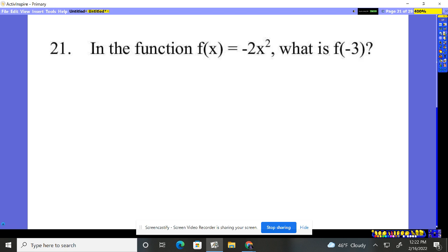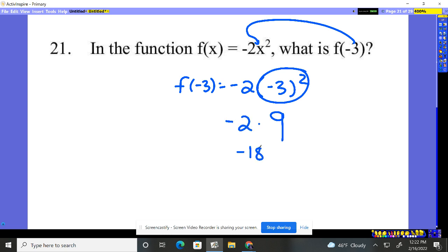21, in the function, what is f of negative three? So all it's saying is, hey, plug negative three into that x right there. So f of negative three will equal negative two times a negative three squared. I know negative three squared is positive nine, so I have negative two times positive nine. Negative 18 will be our answer for problem 21.